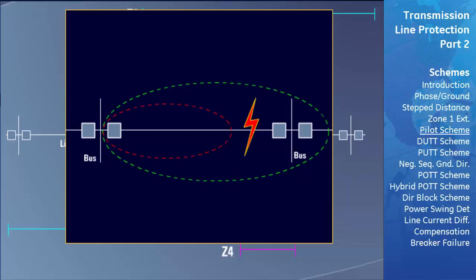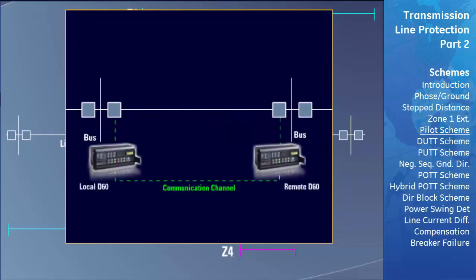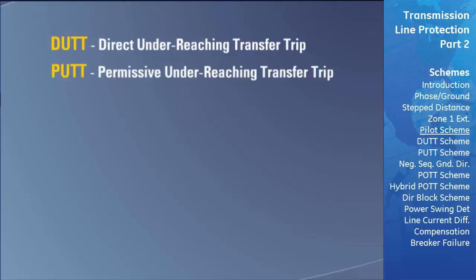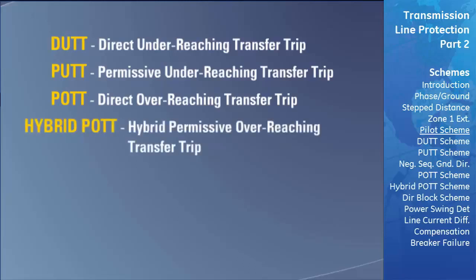Pilot schemes speed up fault clearing inside Zone 2 of the local relay by communicating with the relay at the remote end to determine if the fault is actually on the transmission line. All pilot-aided schemes require a communication channel between the two relays. The most common pilot-aided schemes are the DUTT scheme (Direct Under-Reaching Transfer Trip), the PUTT scheme (Permissive Under-Reaching Transfer Trip), the POTT scheme (Permissive Over-Reaching Transfer Trip), the hybrid POTT scheme (Hybrid Permissive Overreaching Transfer Trip), and the directional blocking scheme.